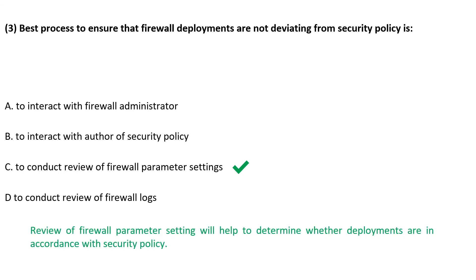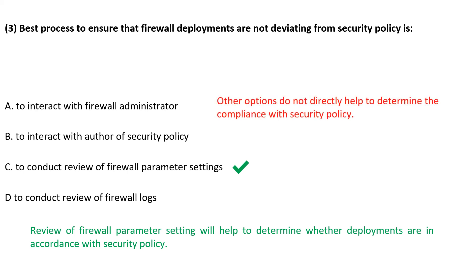The best process to ensure that firewall deployments are not deviating from security policy is to review the firewall parameter settings. This will help determine whether deployments are in accordance with security policy or not. Other options do not directly help determine compliance with security policy.